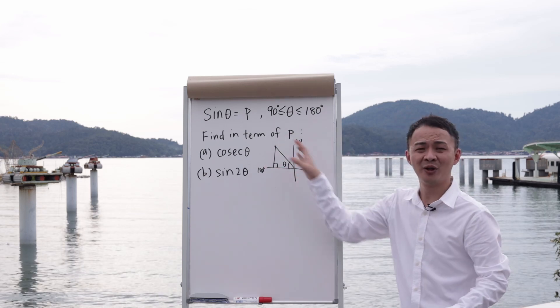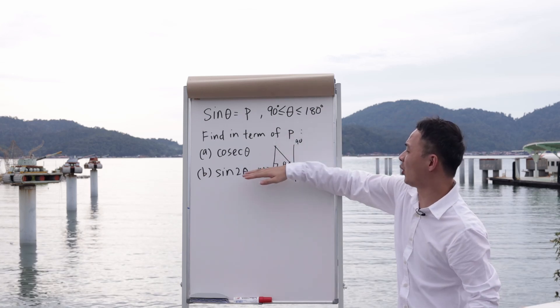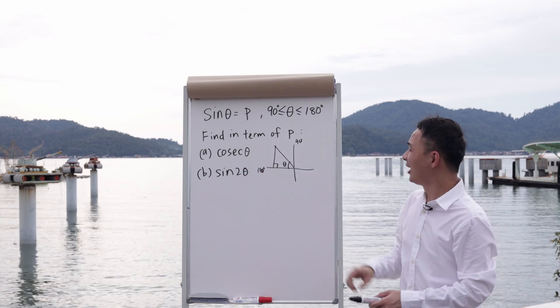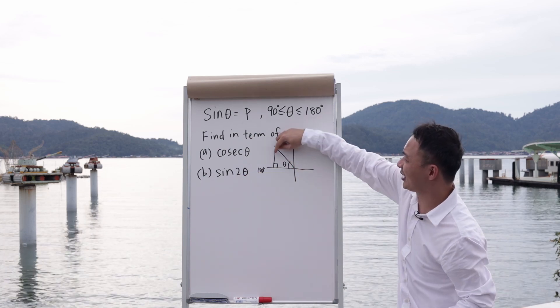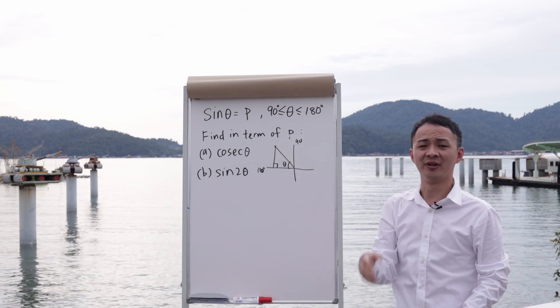You cannot simply draw the triangle another way. The adjacent must always be on the x-axis, and the angle must always be in the middle. You cannot say the theta is on the top here—you will be wrong.